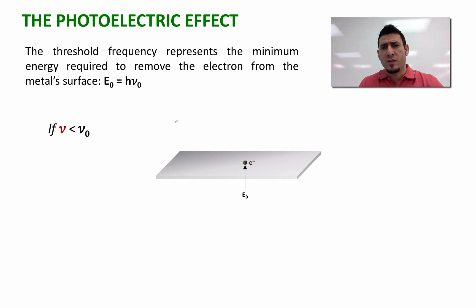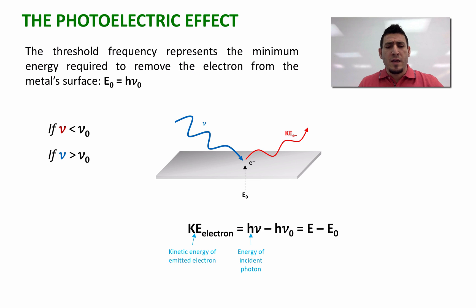Now if the frequency of the light used is less than the threshold frequency, the electrons will not be removed. However, if the frequency of the light used is greater than the threshold frequency, electrons will be removed. Now the kinetic energy of the electron removed can be calculated by hν minus hν₀, or E minus E₀. So KE electron is the kinetic energy of emitted electron, hν is the energy of incident photon, and hν₀ is the energy required to remove an electron from metal surface.